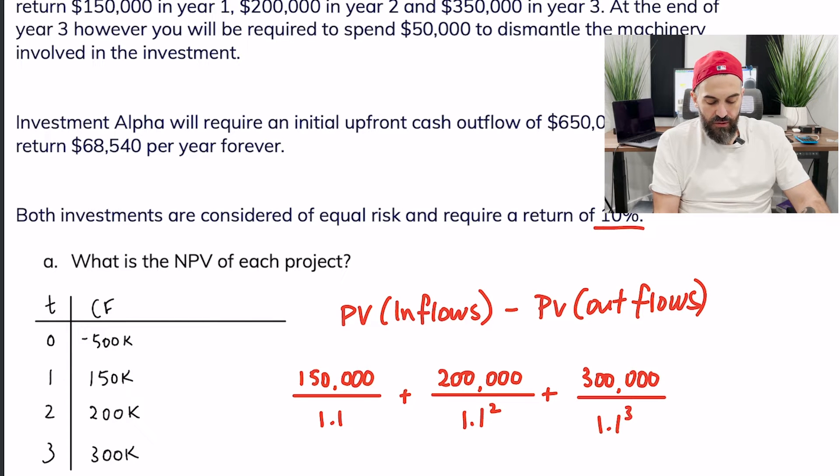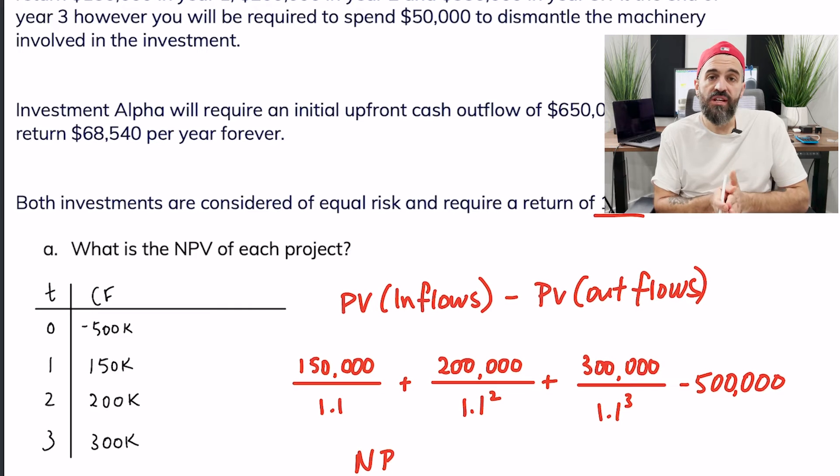10% for three years minus the initial investment of $500,000. So you should end up with a net present value of just over $27,000, $27,047.33 to be exact.